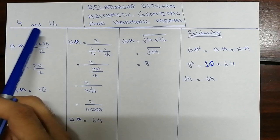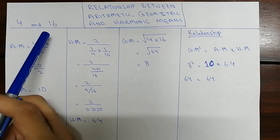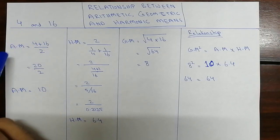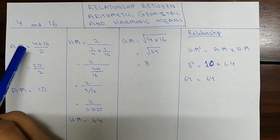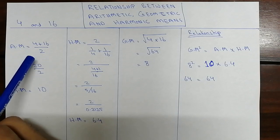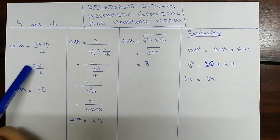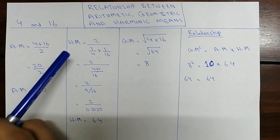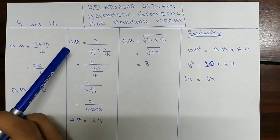For example, we have the two numbers 4 and 16. We will take the arithmetic mean — we simply take 4 plus 16 divided by 2, so 20 divided by 2. The arithmetic mean will be 10.